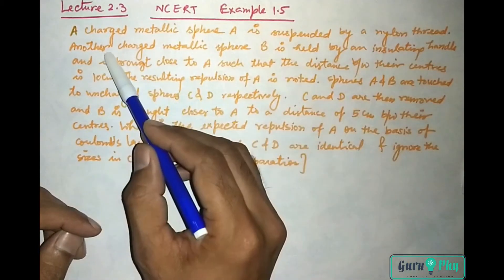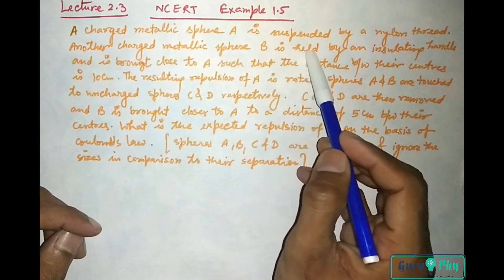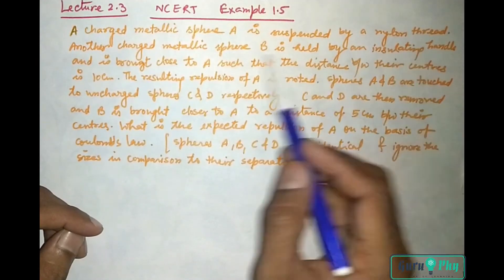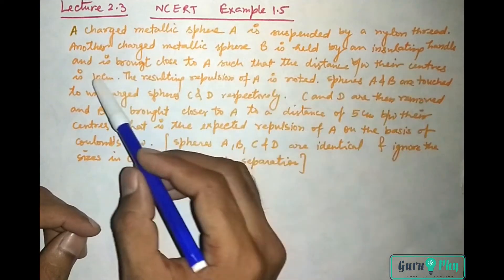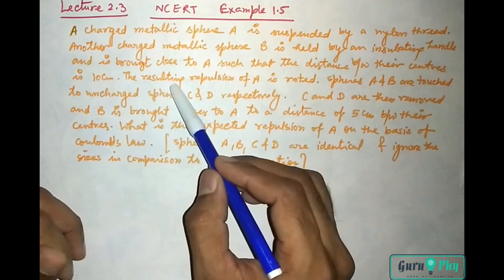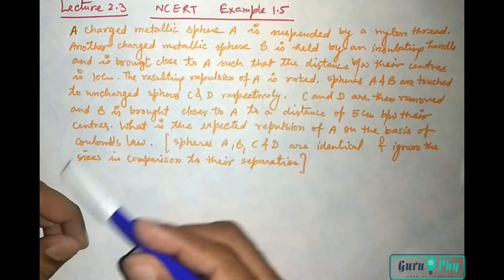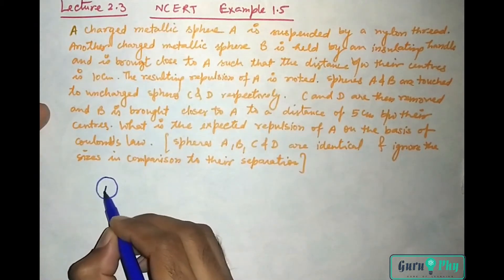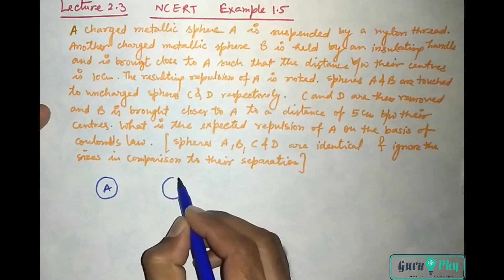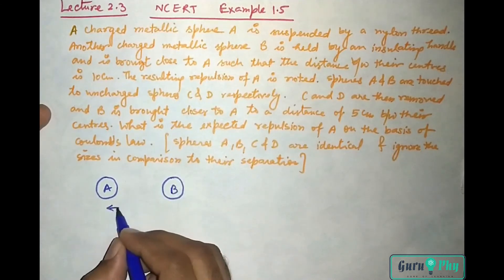Another charged metallic sphere B is held by an insulating handle and is brought close to A such that the distance between their centers is 10 cm. The resulting repulsion of A is noted. Two spheres are given, one is A and the other sphere is B. The distance given is 10 cm.